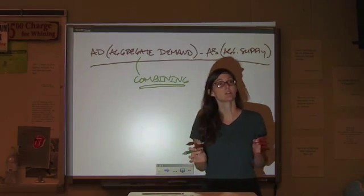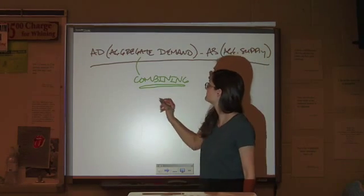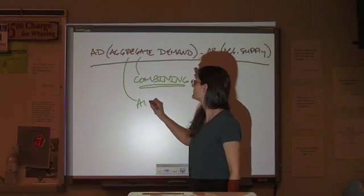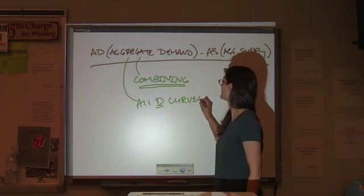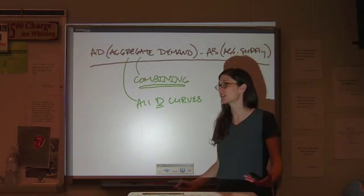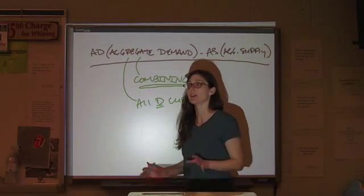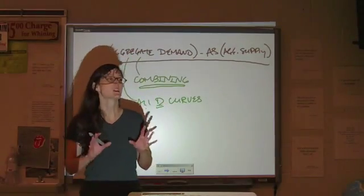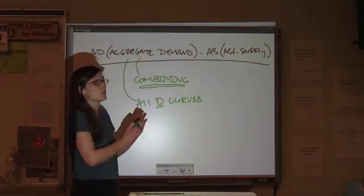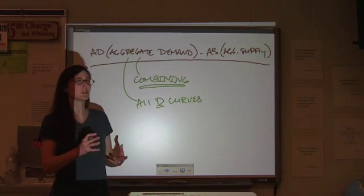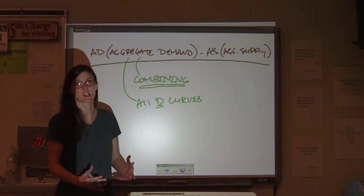In a nutshell, aggregate demand is the combination of all of the demand curves, which sounds a little bit silly. This is one of those concepts that some people don't like about macroeconomics, because we're getting so big that can we really draw conclusions about something that does not actually exist?